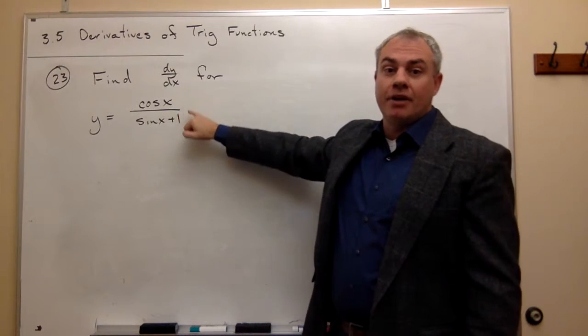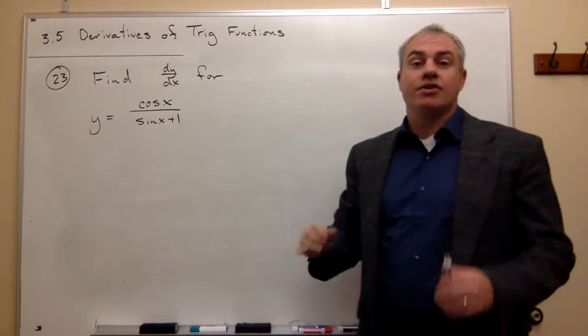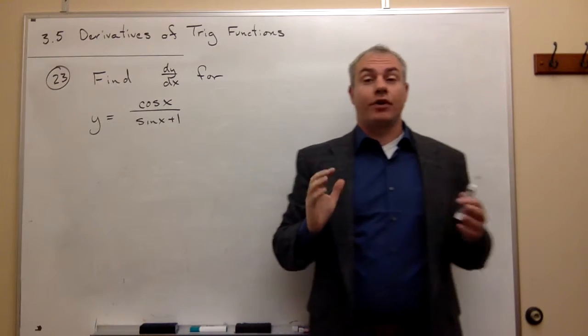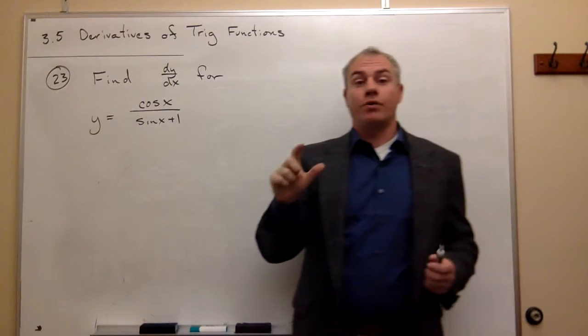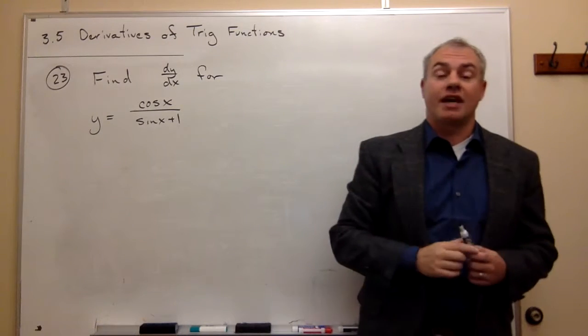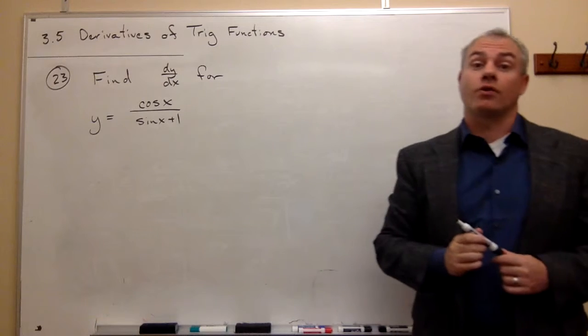I have a function on the top, and I have a function on the bottom. So that's what I'm concerned with first and foremost is I have a quotient. And whenever I have a quotient of two functions, then to take the derivative, I really need to use the quotient rule.